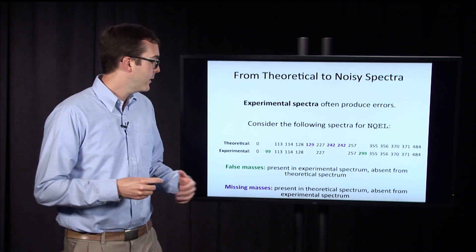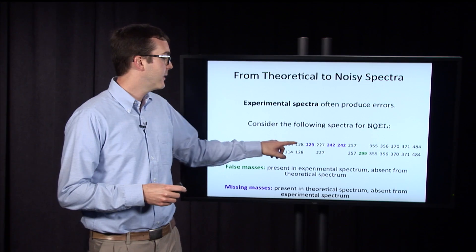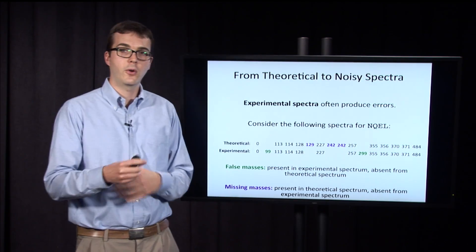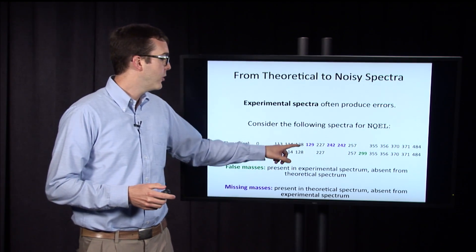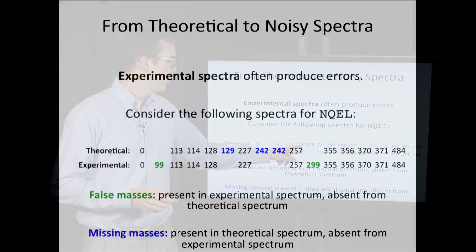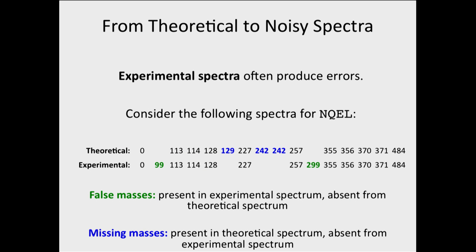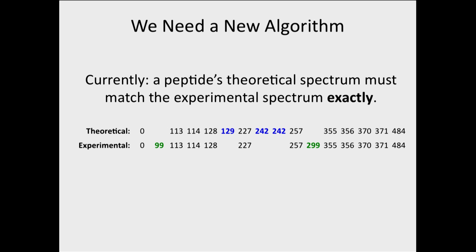We also have missing masses — masses that are in the theoretical spectrum of the correct peptide but don't actually get produced in the experimental spectrum, so they're missing. This is a problem because our current implementation requires the peptide's theoretical spectrum to exactly match the experimental spectrum, and that's clearly not the case here.